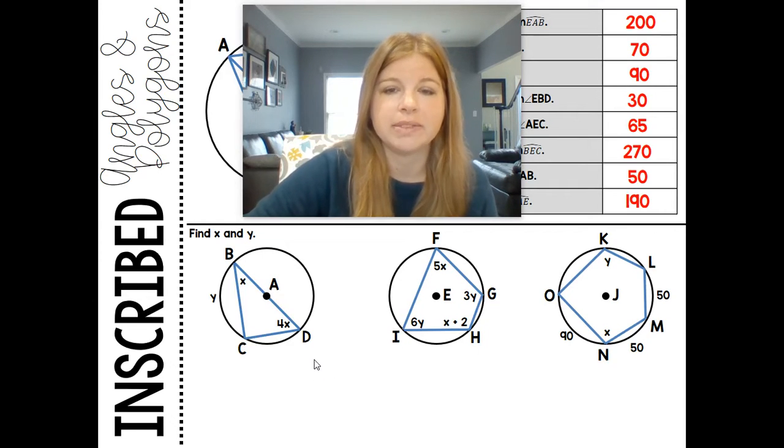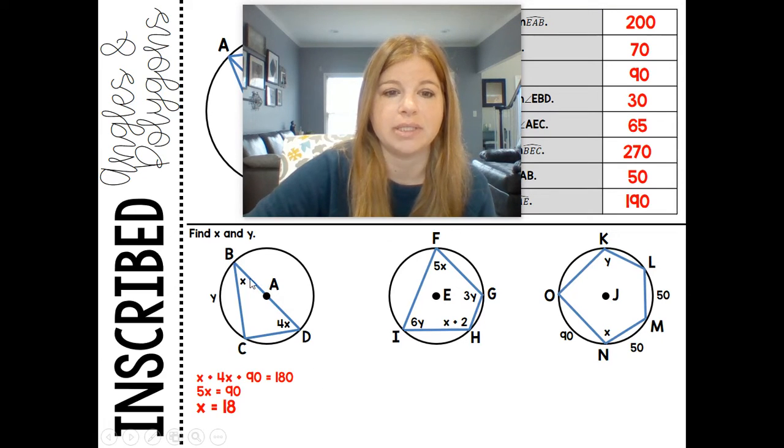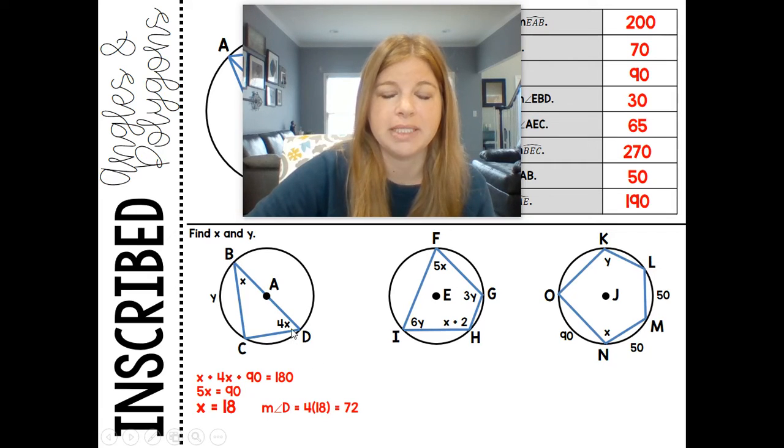Let's look at the bottom problems with inscribed polygons. In this first one, find X and Y. I see that angle C is an inscribed angle opening to arc BD, which is a semicircle of 180. So C is 90 degrees. That means X plus 4X plus 90 equals 180. That's a simple equation: we get X equals 18. Now if X equals 18, then Y is the arc intercepted by this angle, and Y would be double the measure of this angle. If I plug in 18, I can double it to get Y. The measure of angle D would be 4 times 18, which is 72, and arc Y would be it doubled, which is 144.